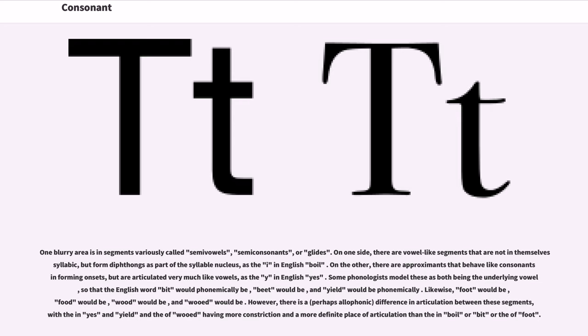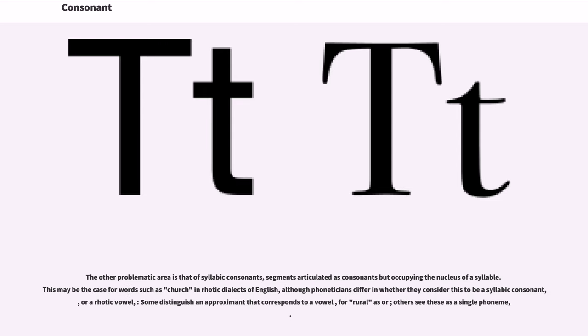However, there is a perhaps allophonic difference in articulation between these segments, with the Y in 'yes' and 'yield' and the W of 'wood' having more constriction and a more definite place of articulation than the I in 'boil' or 'bit' or the U of 'foot'. The other problematic area is that of syllabic consonants, segments articulated as consonants but occupying the nucleus of a syllable. This may be the case for words such as 'church' in rhotic dialects of English, although phoneticians differ in whether they consider this to be a syllabic consonant or a rhotic vowel.